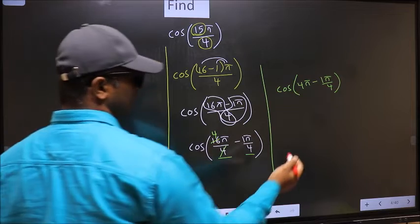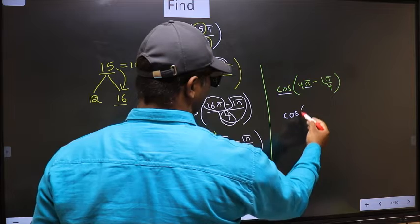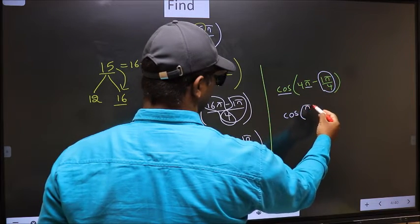Here we have π, so cos is not going to change, it will remain cos. And inside, we get the angle π/4.